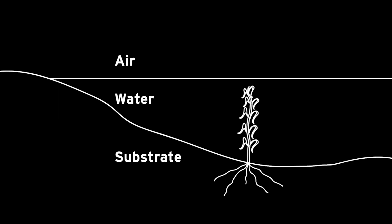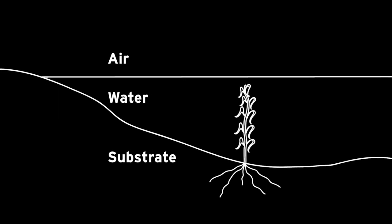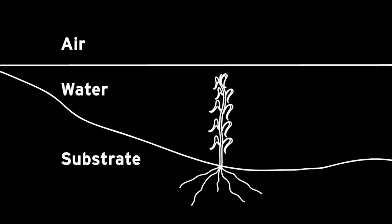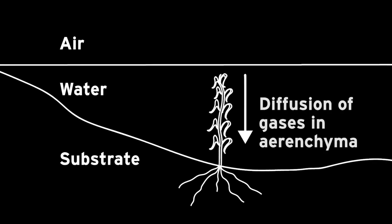Gases can also diffuse within the aerenchyma, through the plant. Oxygen produced during photosynthesis can then diffuse down through the aerenchyma to cells in the roots of the plant, allowing them to carry out respiration. Gases can also move up through the aerenchyma, from the root cells.